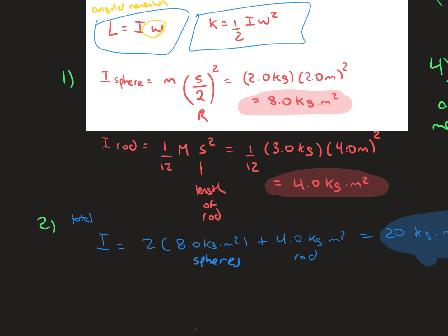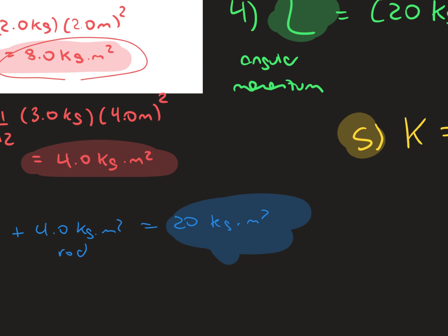Now to find the total moment of inertia, we have to multiply the two masses. So it's 2 times 8 kilograms added to the moment of inertia of the rod, which gives us a total of 20 kilograms meter squared.